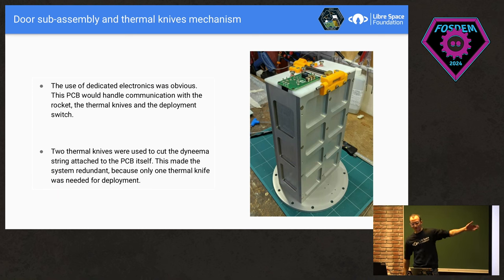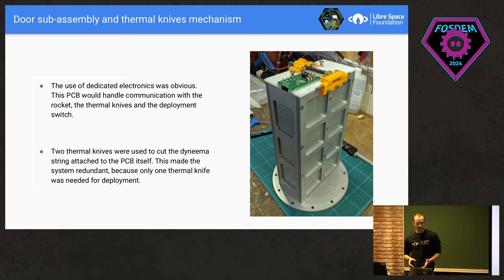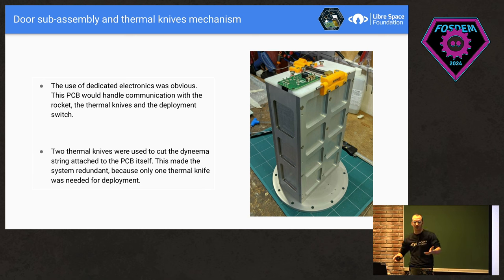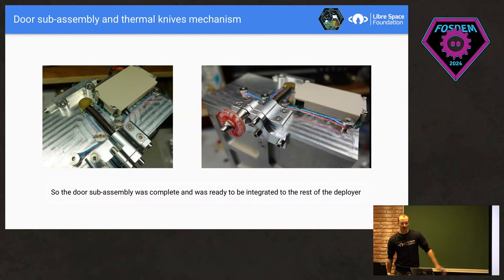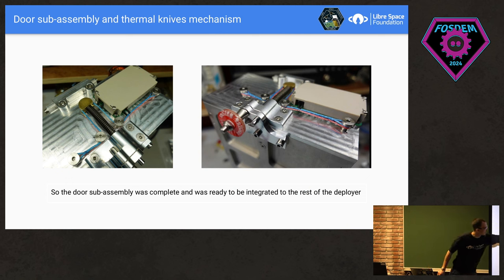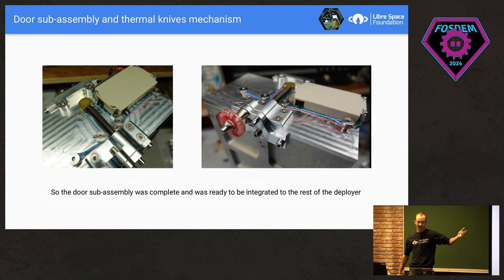We did more prototyping and knew we had to build electronics from scratch — it was mandatory. The PCB handles communications with the rocket to receive the signal, with thermal knives and a deployment switch attached to it so you can verify the door actually opened. We used two thermal knives and two Dyneema strings for redundancy — only one thermal knife needs to work for deployment to happen. That's the final door subassembly with machined parts. The Dyneema string is wrapped around, with two thermal knives — one here and one here. The two strings hold the pin in; they get cut, and the doors are released. The door subassembly was complete and ready to be integrated into the rest of the deployer.